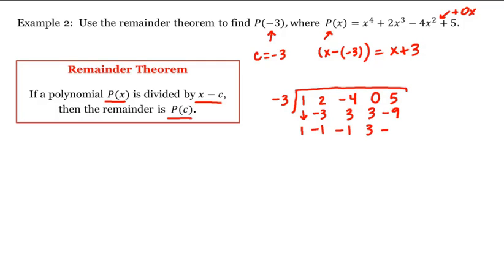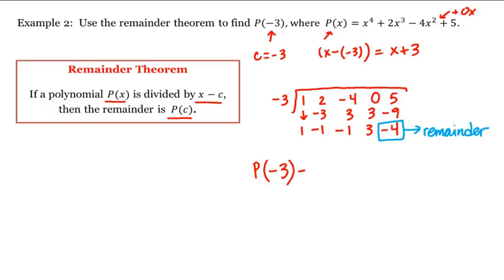We add to get negative 4. With synthetic division, this last number is our remainder, and therefore that is p of negative 3 by this theorem. So our answer is that p of negative 3 is equal to negative 4.